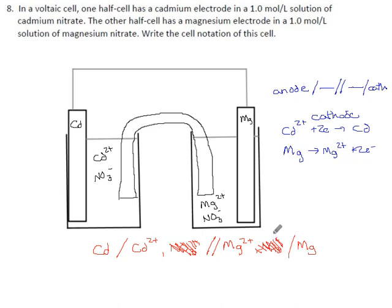If we want to do this right, the magnesium is the anode, so we should start off with the magnesium metal, then the ions in the liquid on the magnesium side, double slash for the salt bridge, then the cadmium ions, and finally the cadmium.